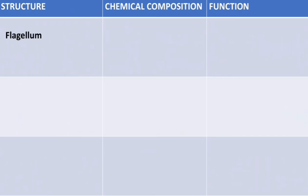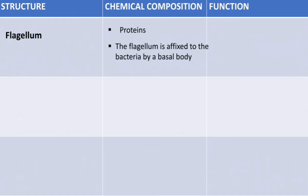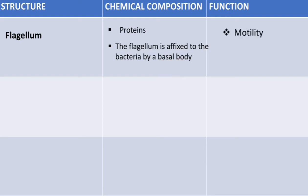The first of the remaining structures is the flagellum. Its chemical composition is protein. An important point: the flagellum is affixed to the bacteria by a basal body — so if you hear about a basal body in a question, they are talking about the flagellum. The function is simply motility.